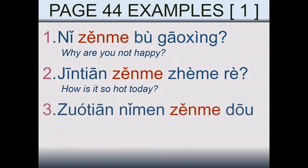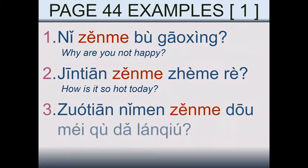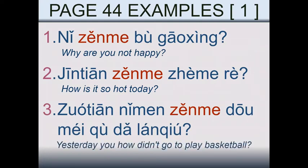Third example: 昨天你们怎么都没去打篮球？ — How didn't you go to play basketball yesterday? Here in the English translation I'm respecting the Chinese structure a little bit to help understand the sentence. Again, we are using zěnme.